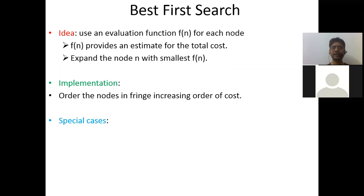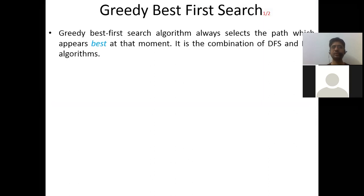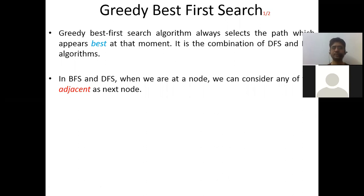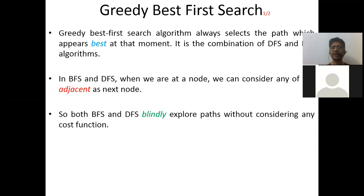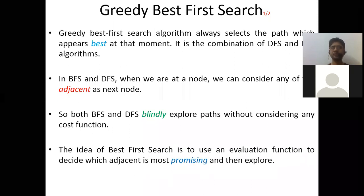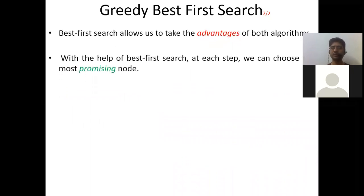The two special cases of best first search are greedy best first search and A* search. Greedy best first search always selects the path which appears best at that moment. It is a combination of DFS and BFS — both BFS and DFS blindly explore paths without considering any cost function. Greedy best first search looks for the most promising node to expand in order to reach the goal, taking advantage of both algorithms.